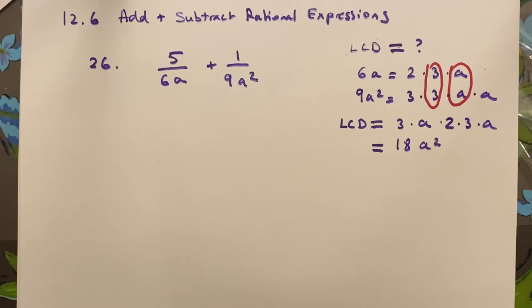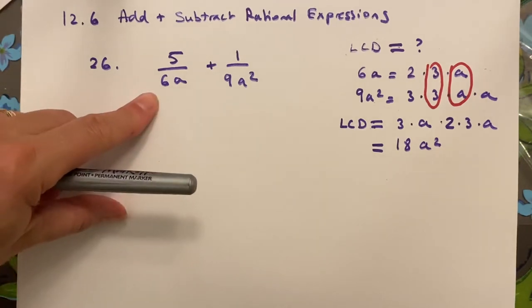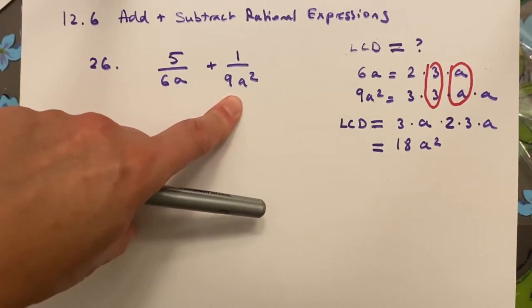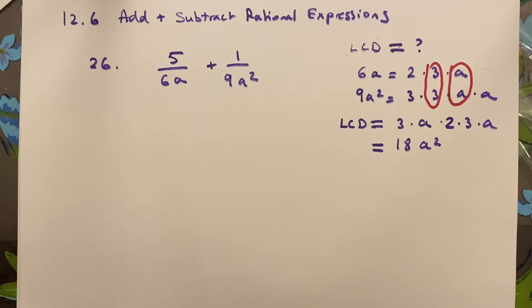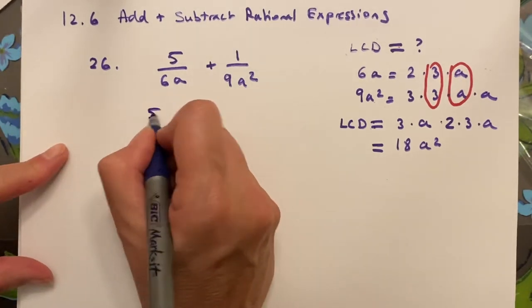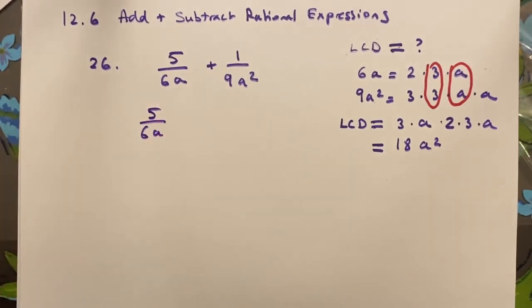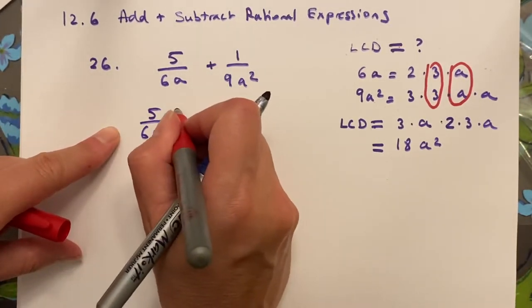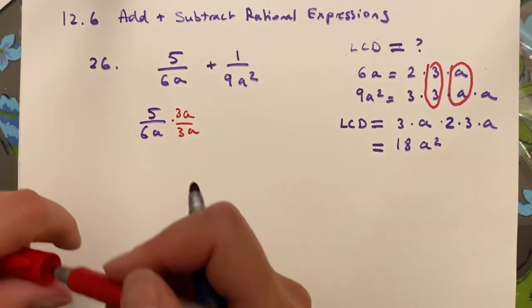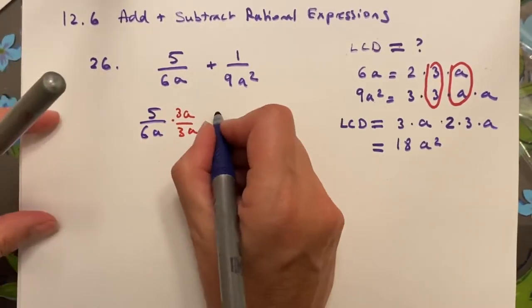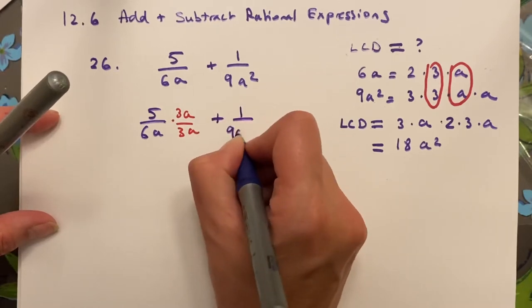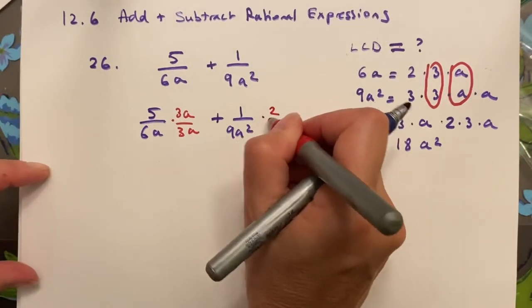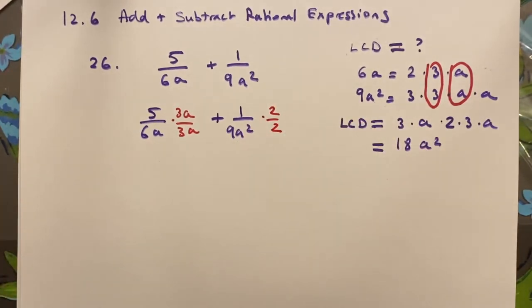Once I know that, I can go back here and say, okay, I need to make this denominator 18a squared, and then this denominator 18a squared. So to do that, I take 5 over 6a, and I'm going to multiply top and bottom by whatever is going to make it 18a squared, and that's going to be 3a over 3a. And I'm going to do the same with this fraction, 1 over 9a squared. And I can see that if I multiply each by top and bottom by 2, I'll get 18a squared.